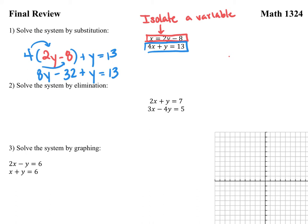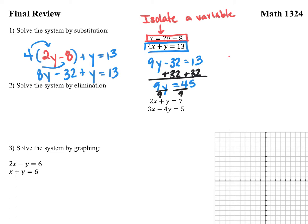If I add like terms — the 8y plus the y — I get 9y minus 32 is equal to 13. I'm going to go ahead and add 32 to both sides, and I get 9y is equal to 45. If I want to solve for y, I'll divide everything by 9, and I get y is equal to positive 5.